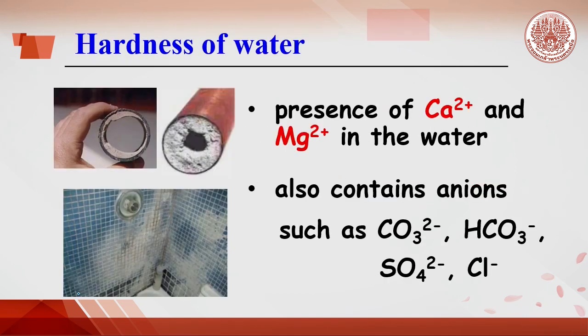Hardness of water is due to the presence of calcium or magnesium ions in water. In real life, we might see hard water in the form of deposits in water pipes, poor lathering of soap, or scum.